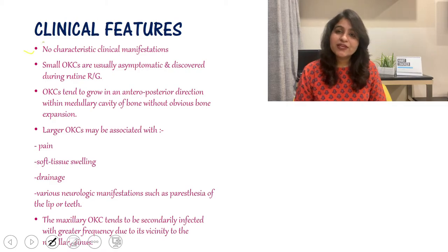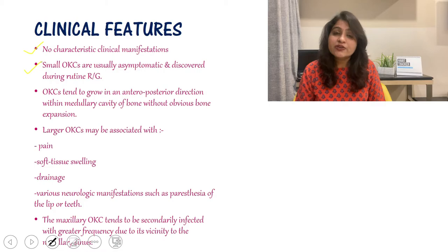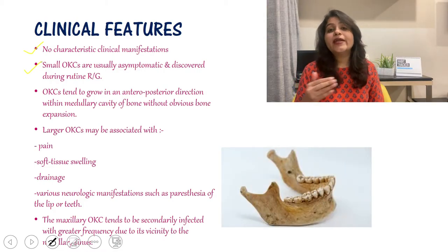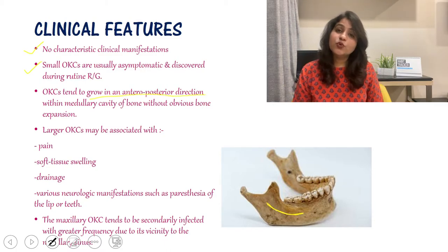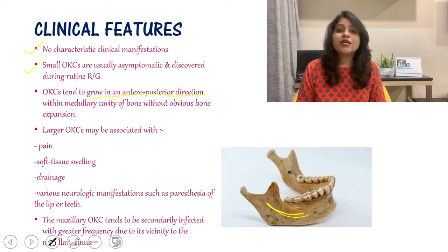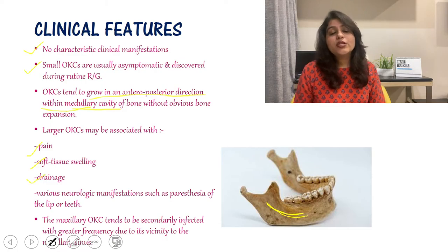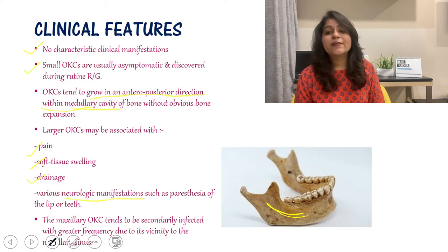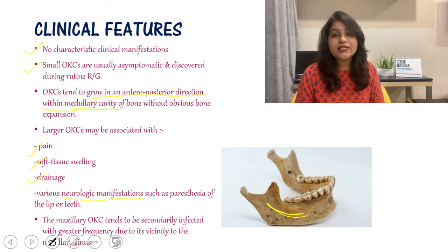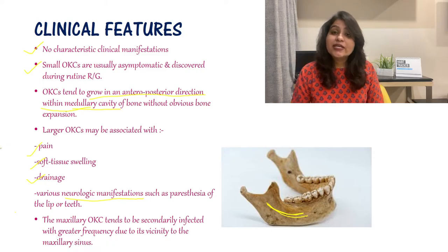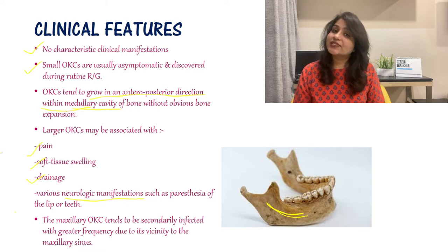There is no characteristic clinical manifestation. Small OKCs may be discovered during routine radiographs due to their tendency to grow anteroposteriorly with minimal bone expansion. Large OKCs may produce pain, soft tissue swelling, drainage, and neurological manifestations like paresthesia of the lip or teeth. Maxillary OKCs tend to be secondarily infected due to their close proximity to the maxillary sinus.